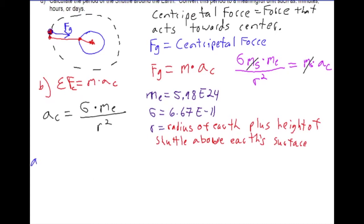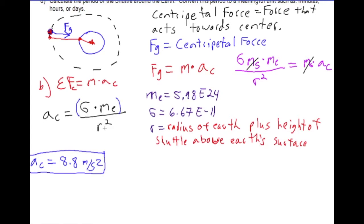Plugging everything in, we find that the centripetal acceleration equals 8.8 m/s². When solving, make sure to put the numerator and denominator in parentheses, and remember to square the r value after adding the radius of the Earth and the shuttle height together.